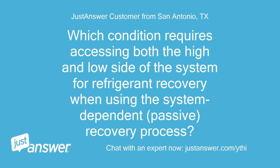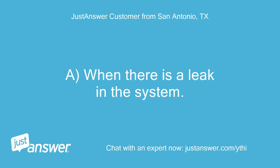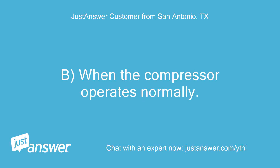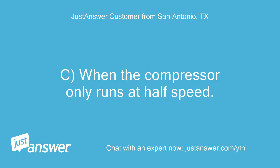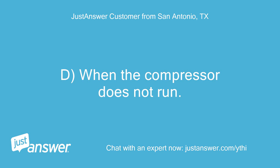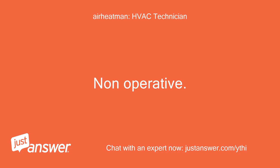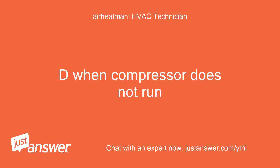Which condition requires accessing both the high and low side of the system for refrigerant recovery when using the system-dependent, passive recovery process? A — when there is a leak in the system. B — when the compressor operates normally. C — when the compressor only runs at half speed. D — when the compressor does not run. Answer: D — when the compressor does not run.